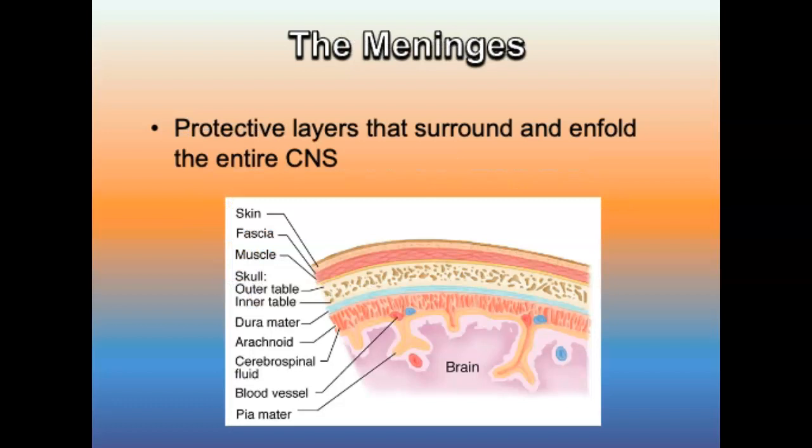The meninges are a protective layer that surrounds and enfolds the entire central nervous system. The dura mater is a strong, fibrous outer layer that covers the brain and is firmly attached to the internal wall of the skull. It splits into two surfaces and forms the venous sinuses; any injury to these sinuses can cause a subdural hematoma. The arachnoid is a delicate, transparent second layer. The pia mater is the thin, translucent, and highly vascular third layer that adheres directly to the surface of the brain. Between each of these layers is a potential space in which bleeding can occur.